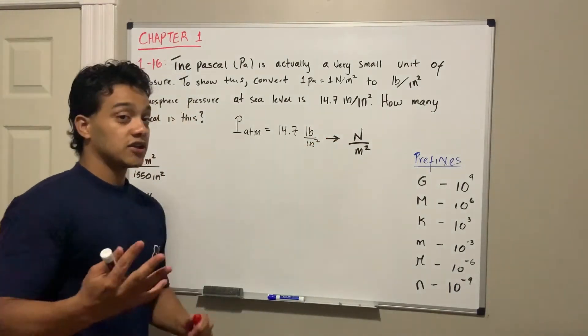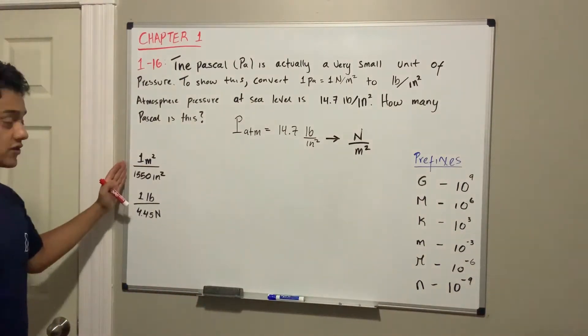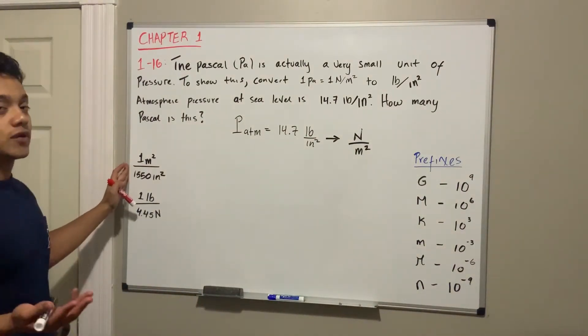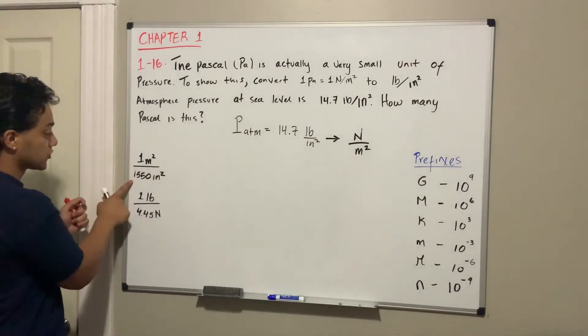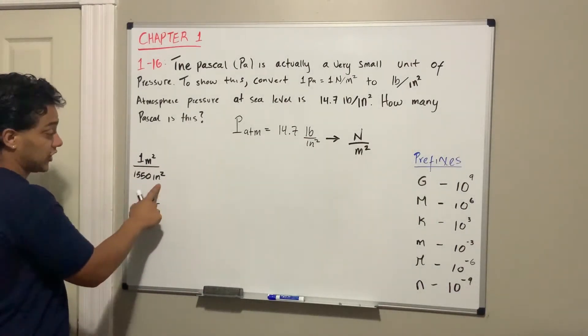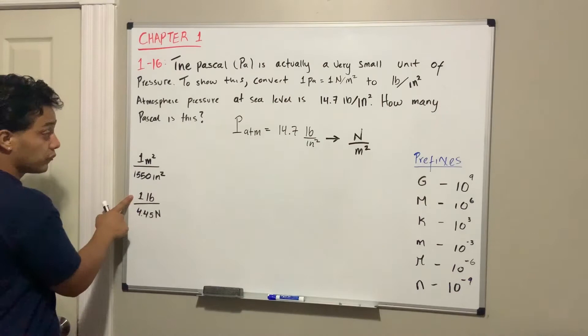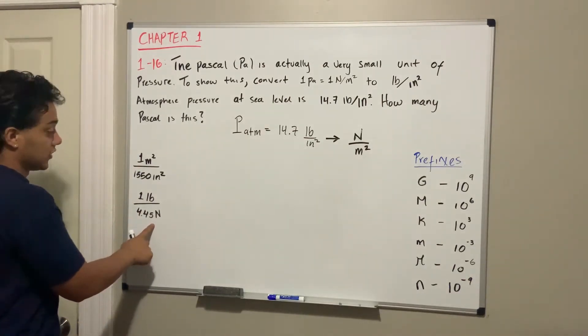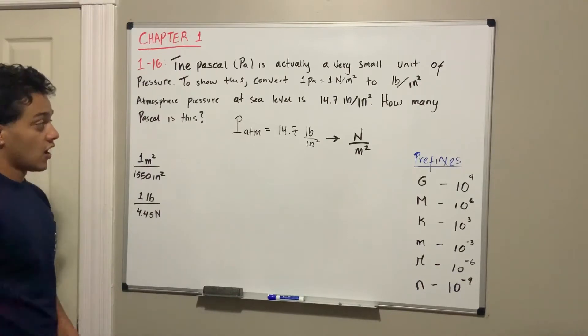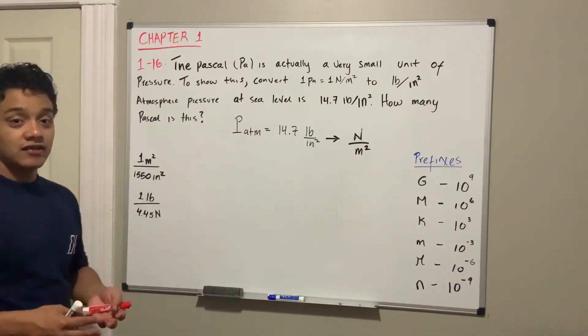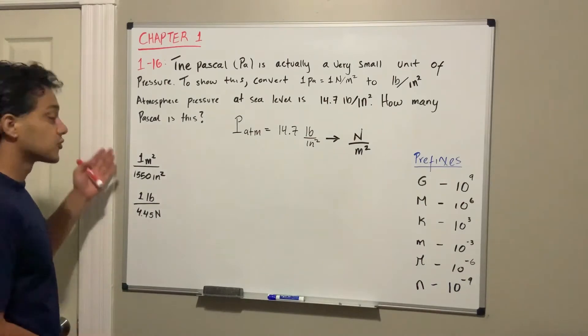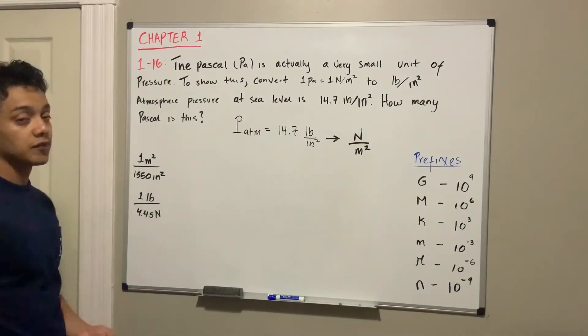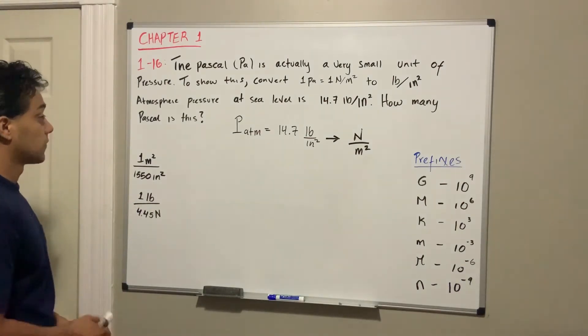What do they mean? Well, 1 meter equals 1550 inches squared, and 1 pound equals 4.45 Newtons. Where did I find these numbers? I didn't come up with them—I just Googled them, or you can find them in your book.